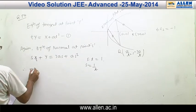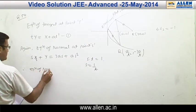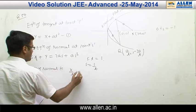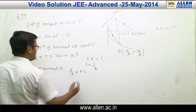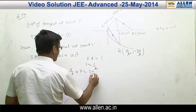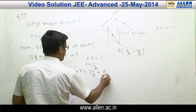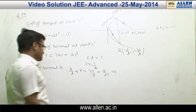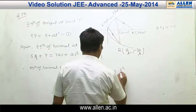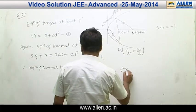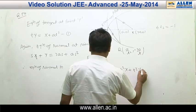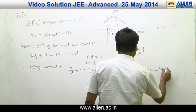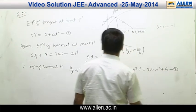Therefore, the equation of the normal becomes: x/T + y = 2A/T + A/T³. Cross-multiplying by T³, we get: T²x + T³y = 2AT² + A. This is the second equation.